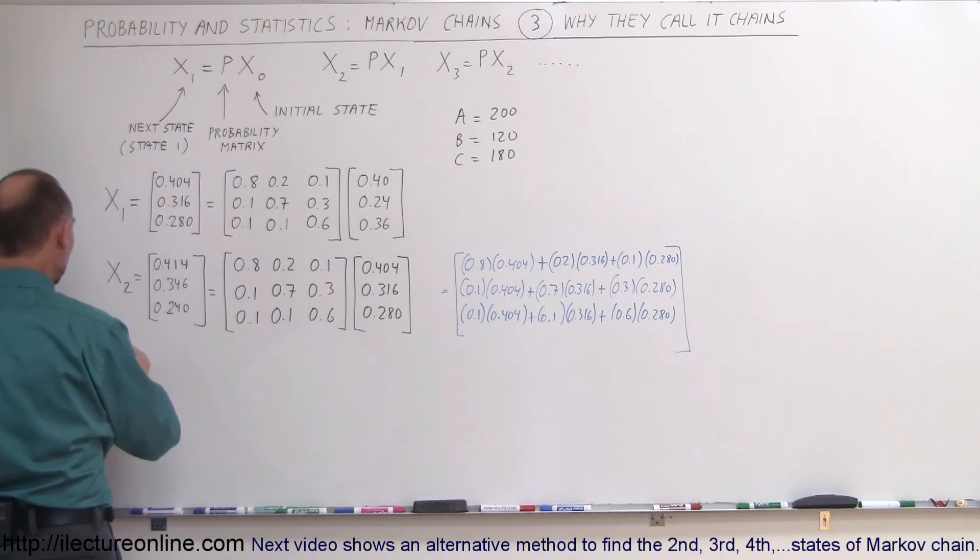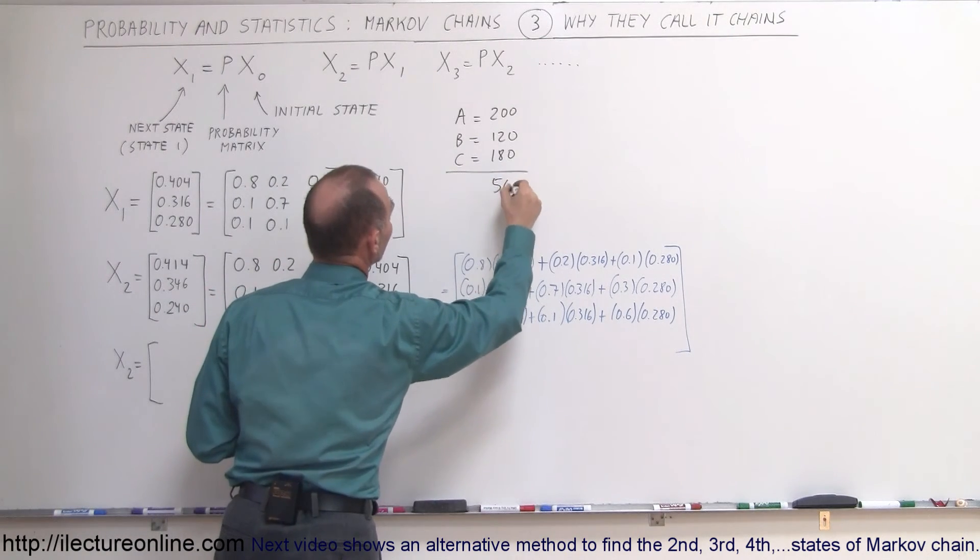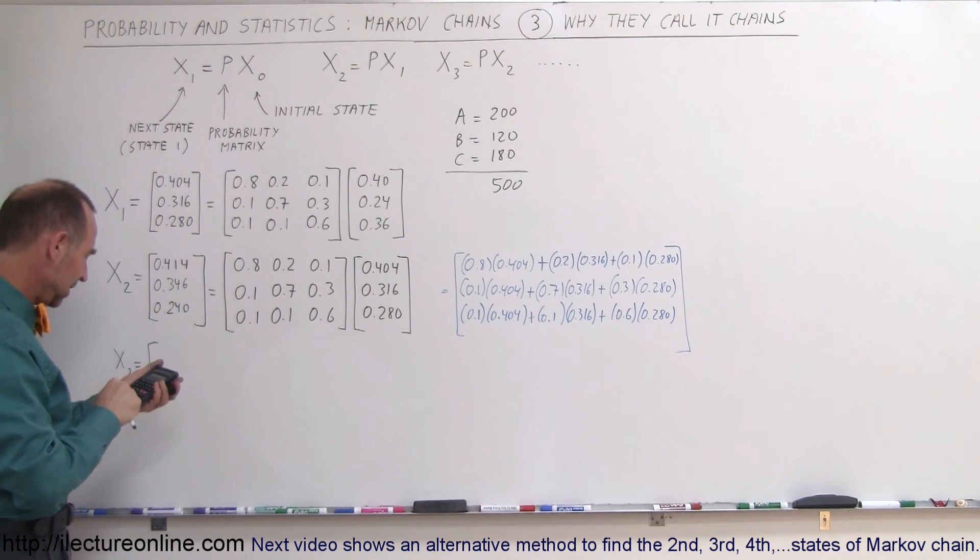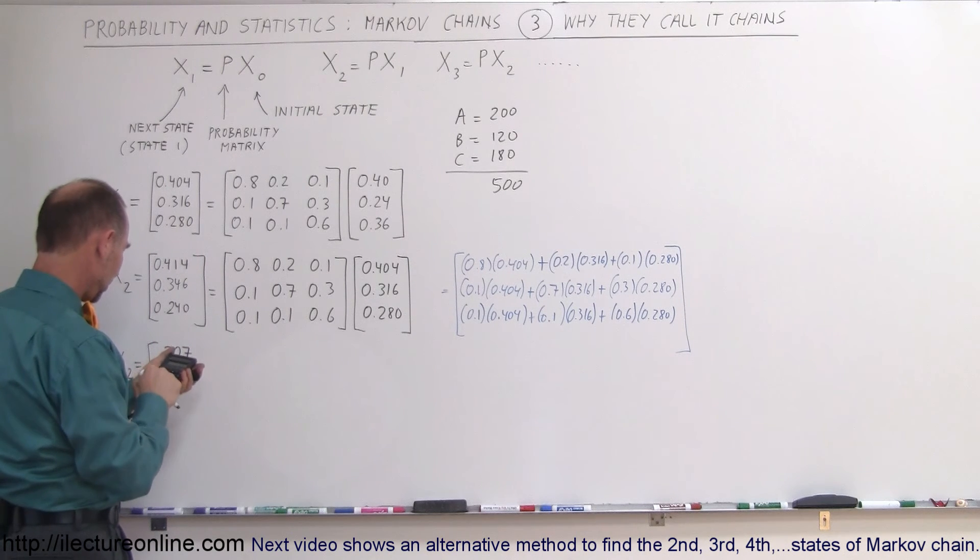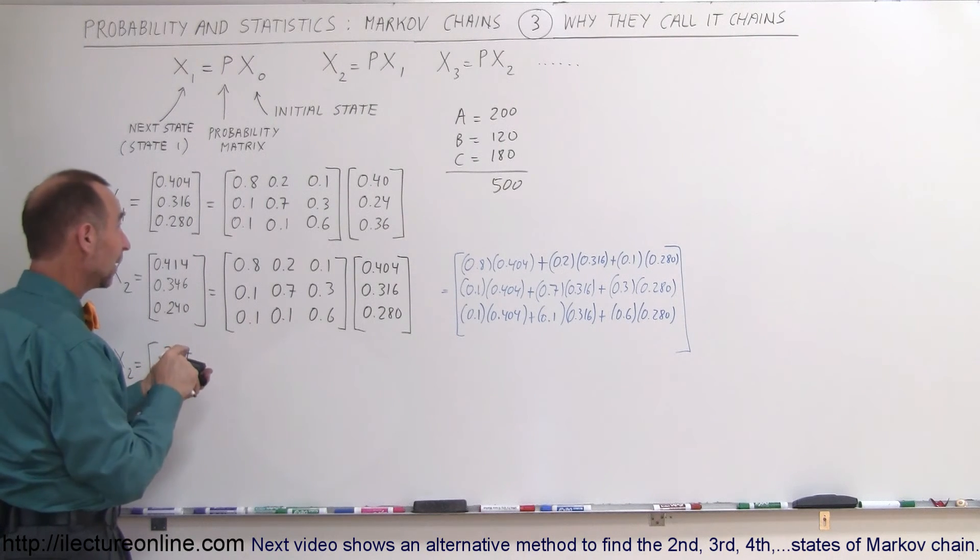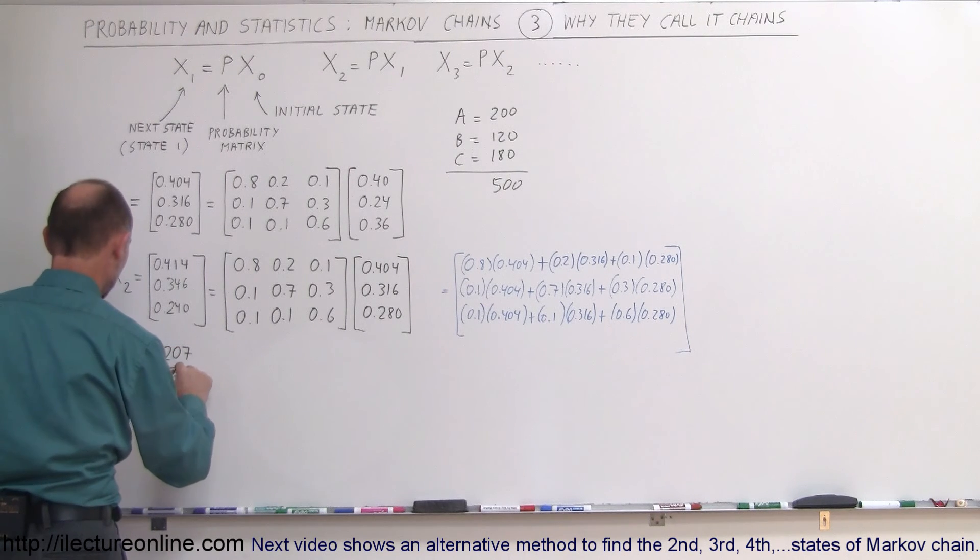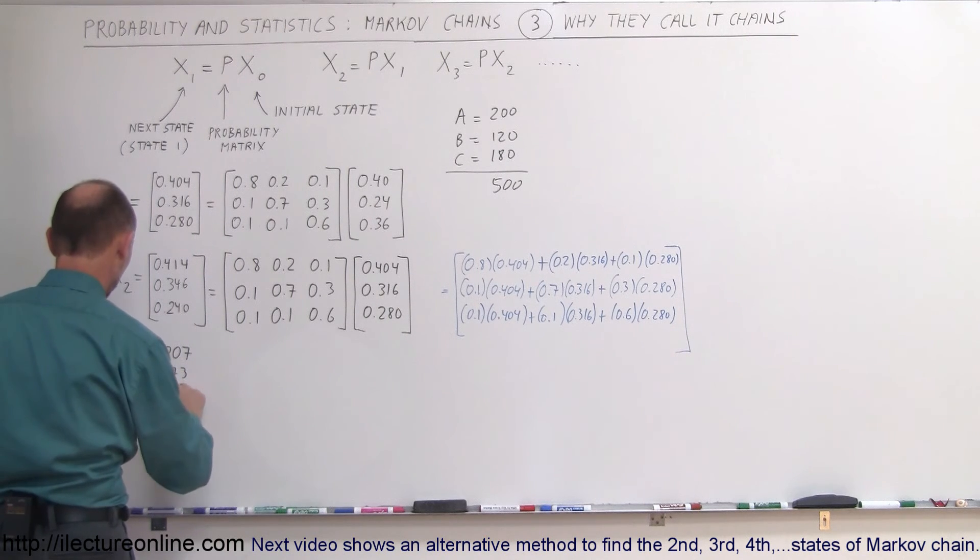So that means X2 in number of customers equals 0.414 times 500 total customers. 0.414 times 500 equals 207 customers going to store A. 500 times 0.346 equals 173. And finally, 0.24 times 500 equals 120.